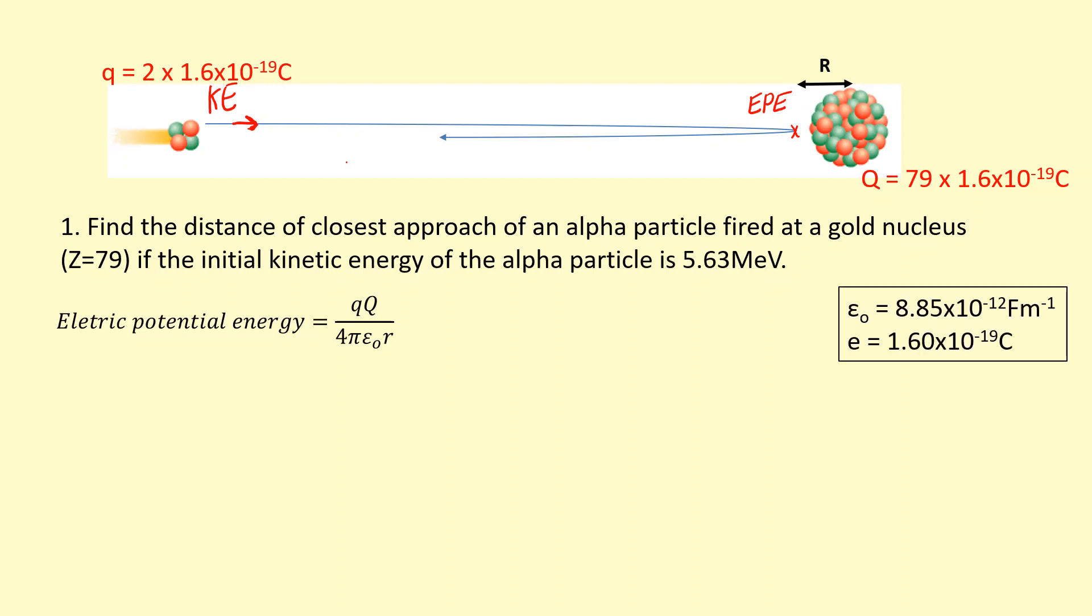And the epsilon naught here is the permittivity of free space, which is a constant. R is the radius, or the distance from the center of the nucleus to where the alpha particle stops. So I'm going to use that to estimate the radius of the nucleus.